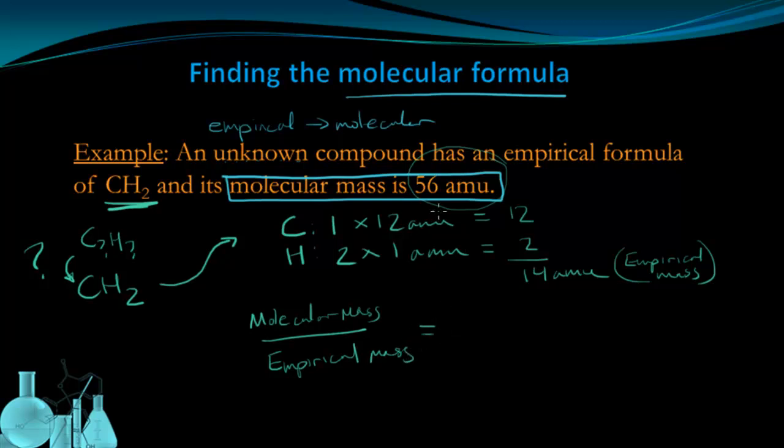This ratio is going to tell me how many times greater the molecular mass is than the empirical mass. Let's plug this in. Molecular mass is 56 AMU, and the empirical mass is 14 AMUs. When I divide 56 by 14, that's going to give me 4.